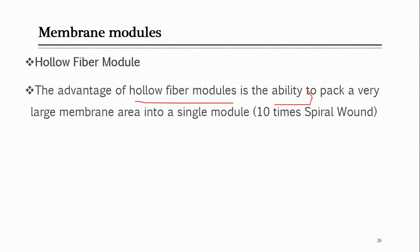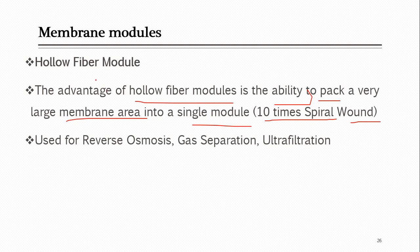Hollow fiber membranes have the ability to pack a very large membrane area into a single module. When arranged in tubular form, more surface area can be provided even in a small packed module. They have about 10 times the area of a spiral wound module for the same outer structure dimensions. Hollow fiber modules are commonly used for reverse osmosis, gas separation, and ultrafiltration.